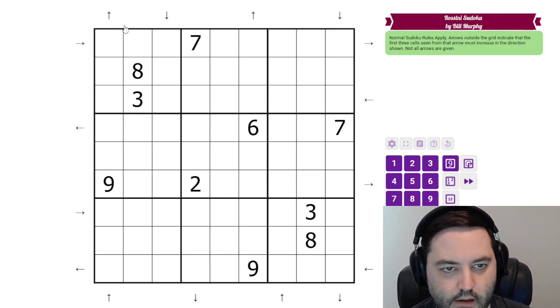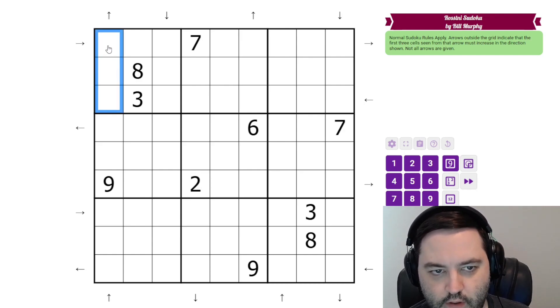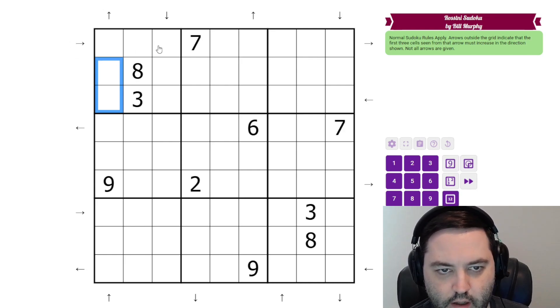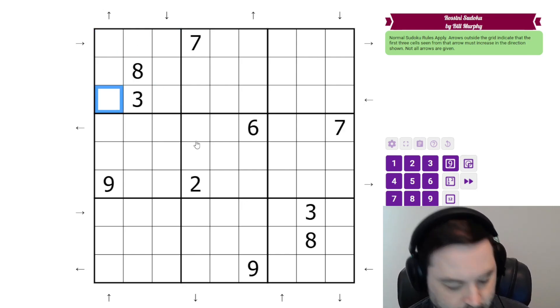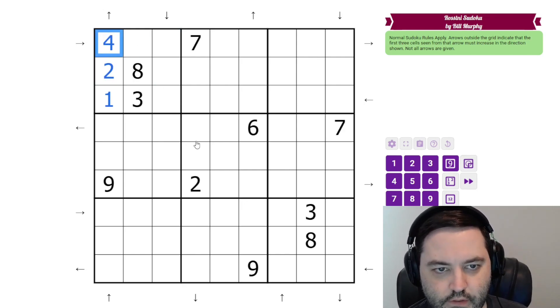I can see in box one, we have a nice start. This arrow is pointing up, so we're increasing going up. But then this arrow is pointing to the right, so we're increasing in that direction. And then this arrow is pointing down, so we're increasing in that direction. So effectively we have a thermo around box one. So we can just fill in the digits that are missing from the box in order. And we're good there.